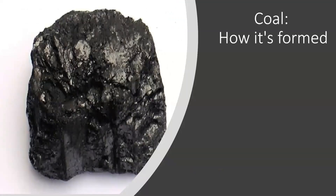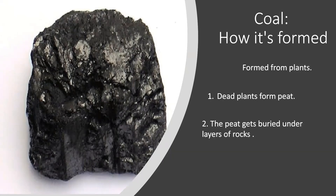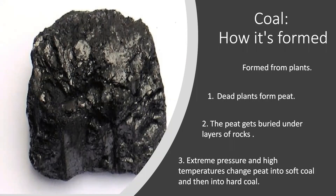Let's talk about coal and how it's formed. Coal forms from plants. Under certain conditions, layers of dead plants build up and form a material called peat. As time passes, the peat gets buried under layers of rock. The extreme pressure and high temperature slowly change the peat into soft coal and then into hard coal. Today, coal fuels many electric power plants. Burning coal turns water into steam, and steam causes generators to spin and make electricity.